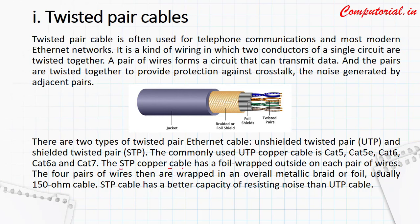The STP copper cable has a foil wrapped outside on each pair of wires, meaning there is a copper layer on each wire which protects it. Whereas unshielded twisted pair — UTP — has no such protection layer around the wire pairs.